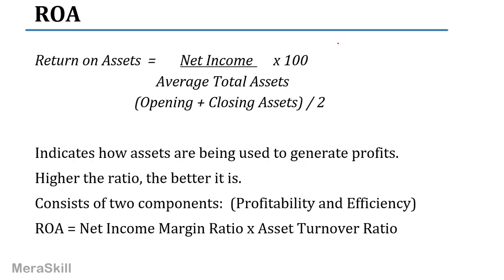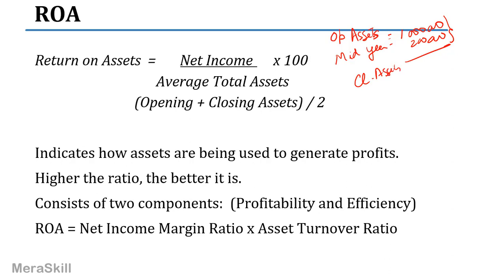Why do we take average? Suppose you had opening assets of 1 million. During mid-year, you purchase 200,000 of assets, so closing assets would be 1.2 million. If I take only opening assets, it means I get a return on 1 million, but I actually used 1 million for the full year and 200,000 for only half a year. So it's cumbersome to be specific, and roughly we take opening plus closing divided by two.